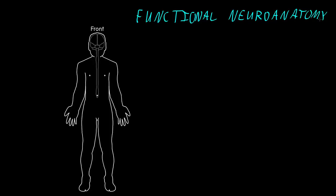Anatomy means the structures, and neuro refers to the nervous system, and then functional just because I like to first think about the nervous system in terms of the functions that it performs.